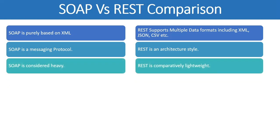The third major difference between SOAP and RESTful web services is that SOAP is considered heavy while REST is considered lightweight. The reason is that SOAP has its own XML-based structure which contains the header and payload, and everything needs to be structured accordingly. Any message communicated via SOAP will consume more bandwidth.